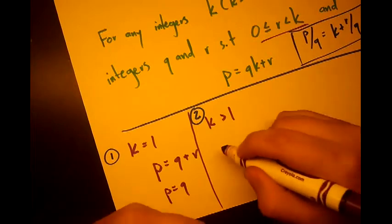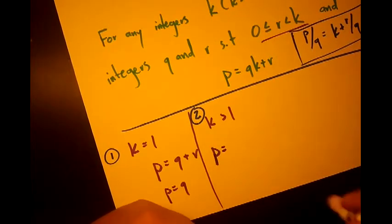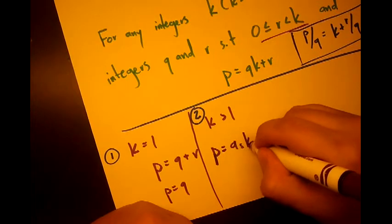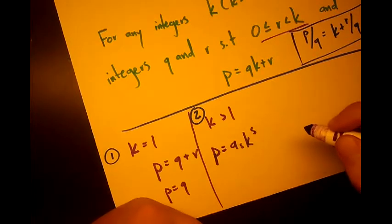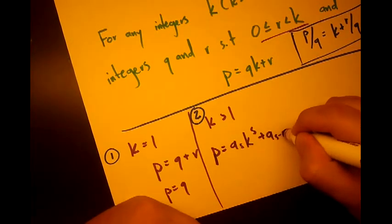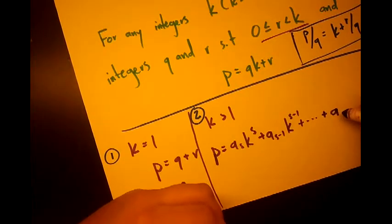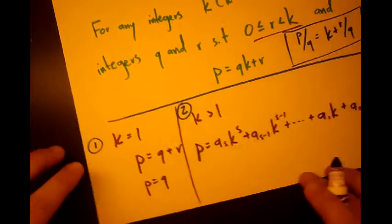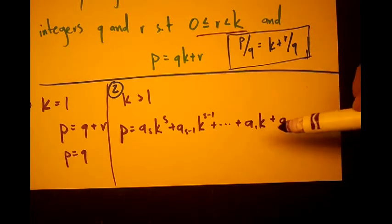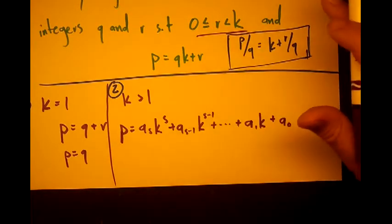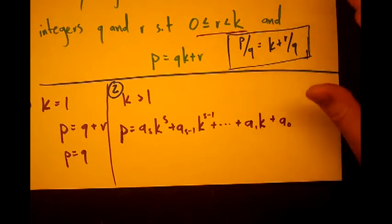So let's see how I want to write this. I think I'll do p equals a sub s k to the s plus a sub s minus 1 k to the s minus 1, and we're just going to keep adding, and eventually we'll get to a sub 1 k plus a naught. And since we're using the basis representation theorem, remember that all the ai's satisfy the same conditions as the basis representation theorem. Check out that video if you forgot.